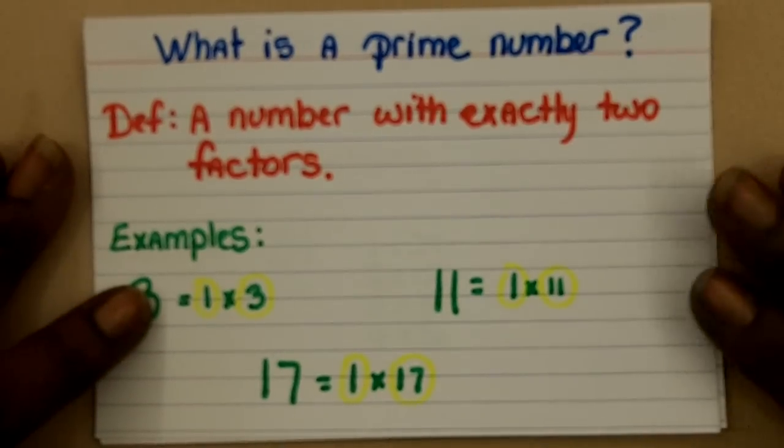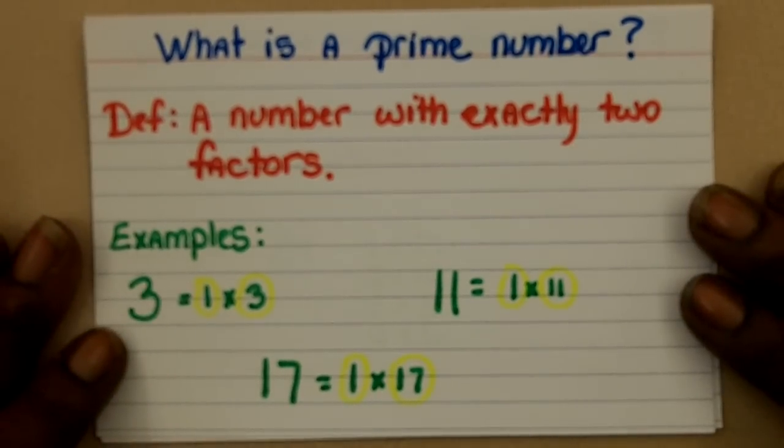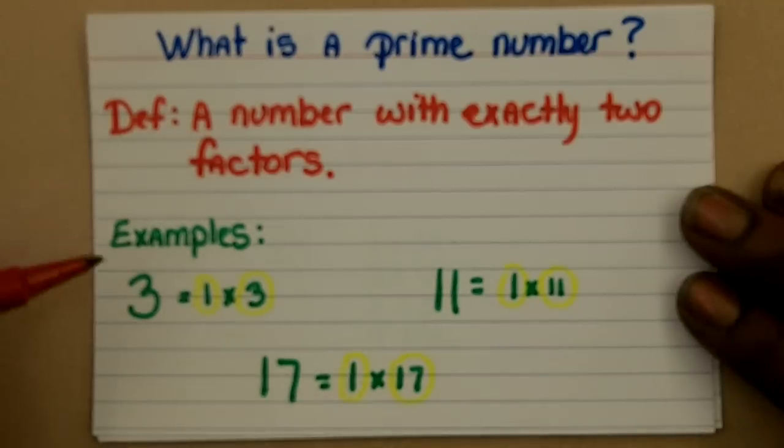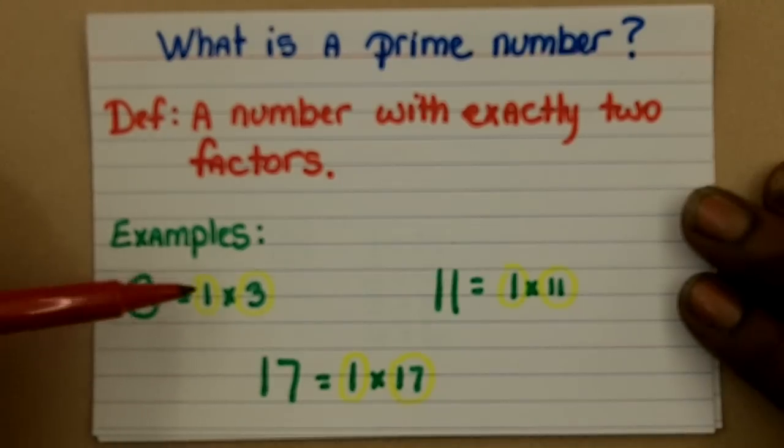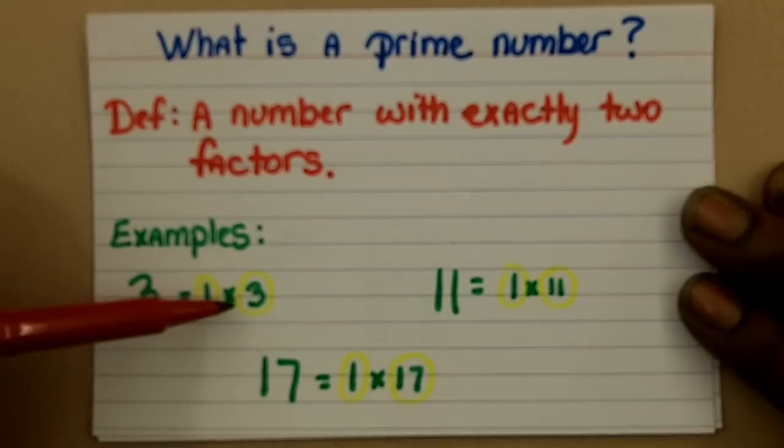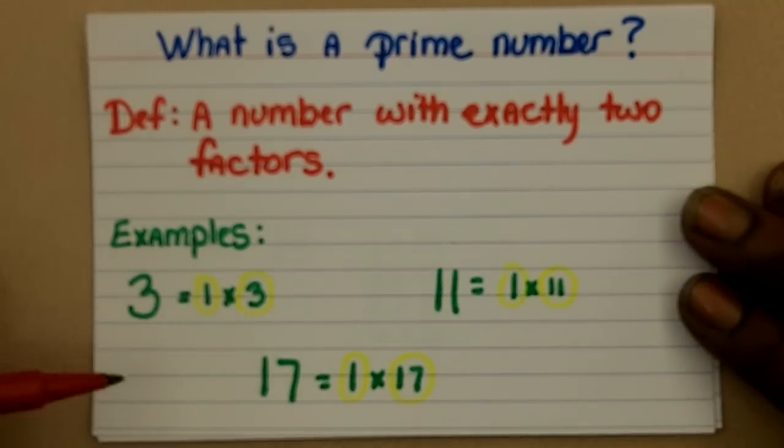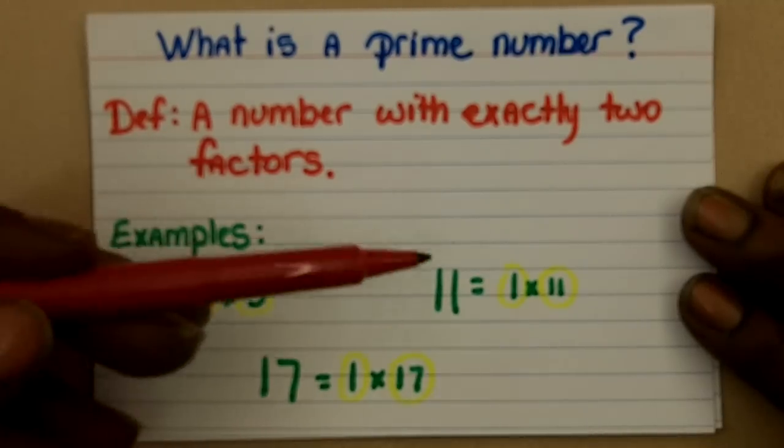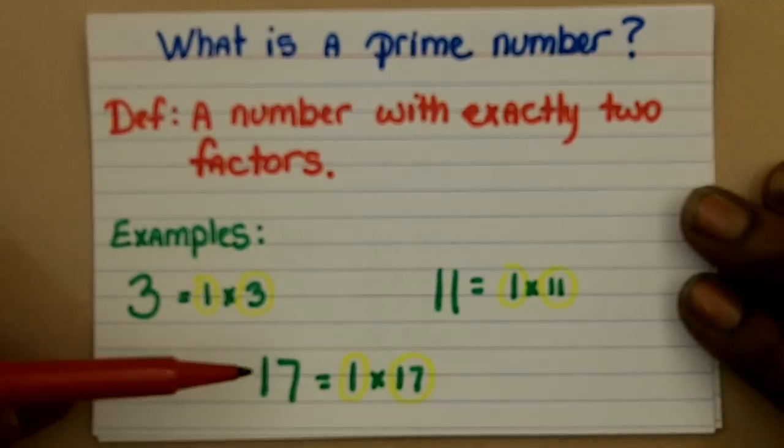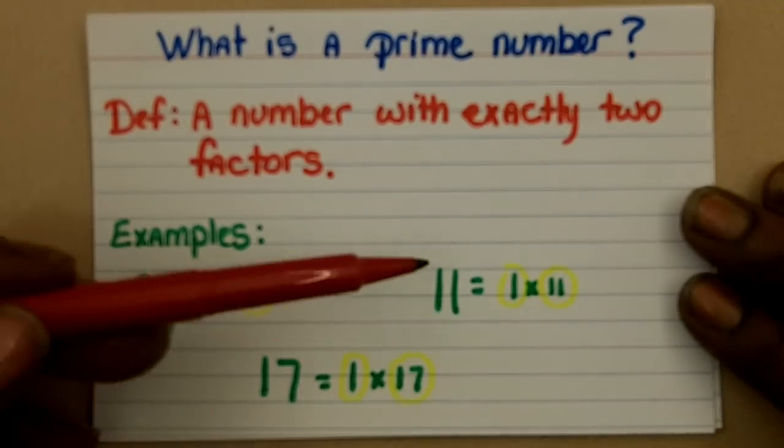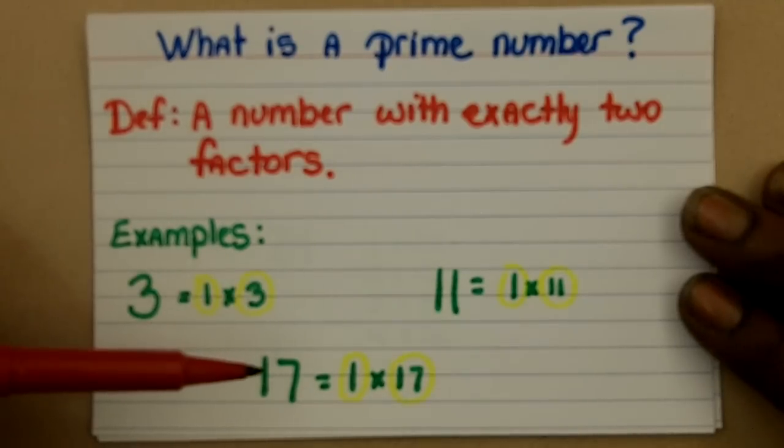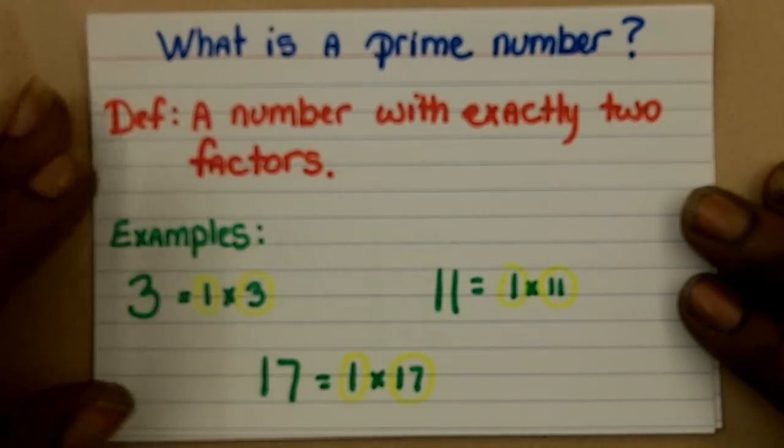Now, what is a prime number? A prime number is simply a number with exactly two factors. For example, 3. If you think of the factor pairs or the numbers you could multiply to get 3, the only two whole numbers that you could multiply to get 3 would be 1 times 3. Therefore, 3 is prime. That's the same case for 11 and 17. The only way to get these numbers as products would be to multiply 1 times the number itself.